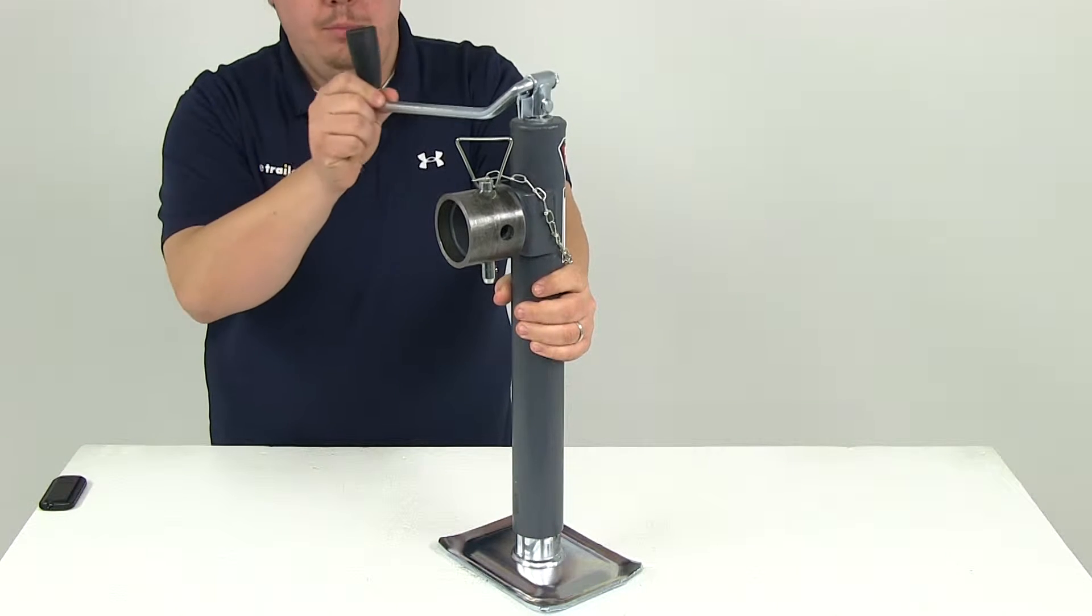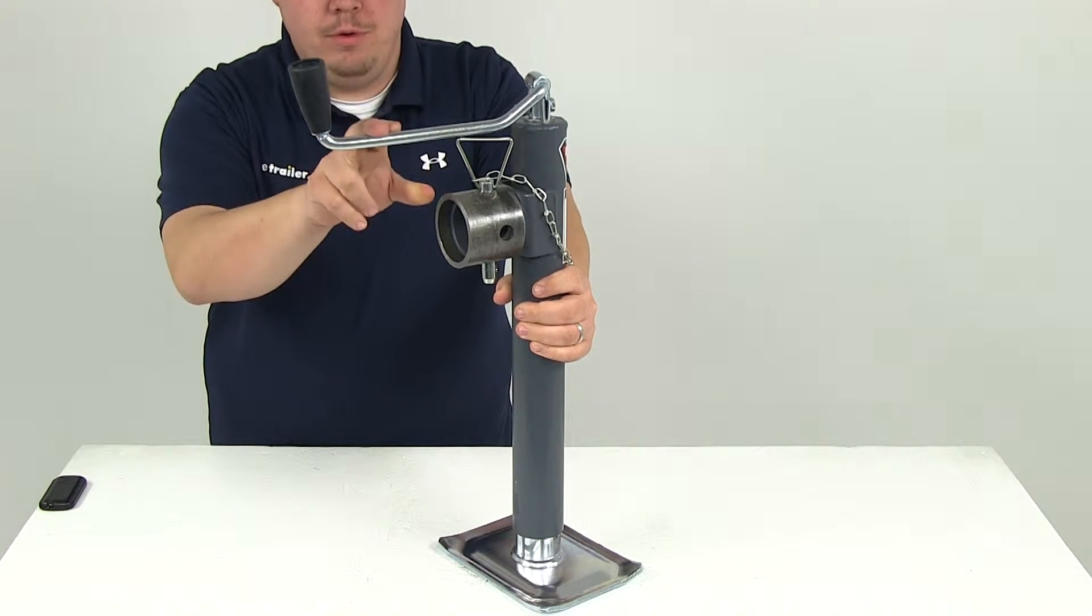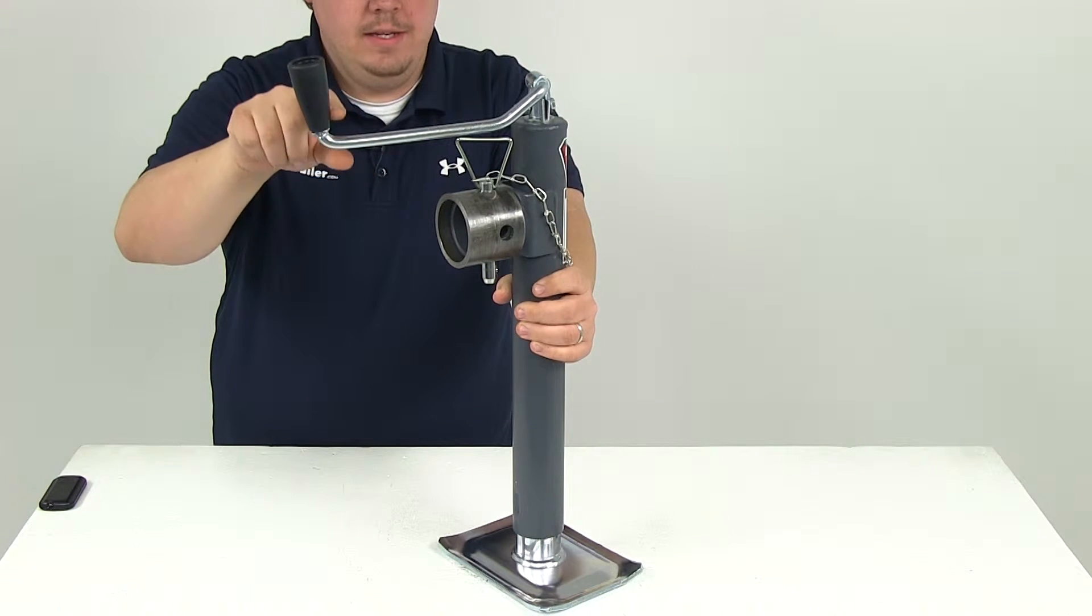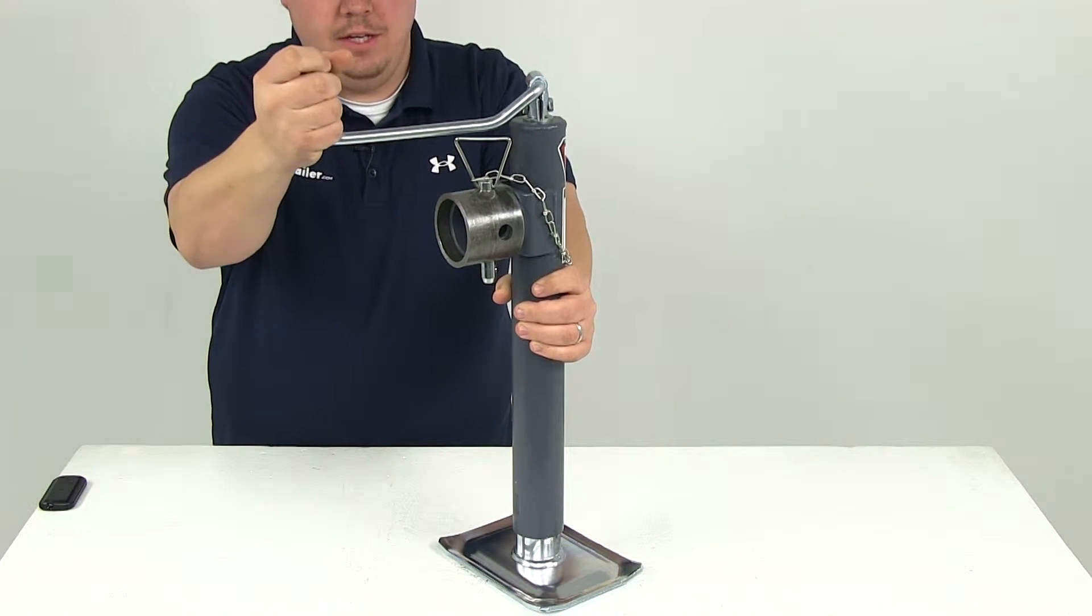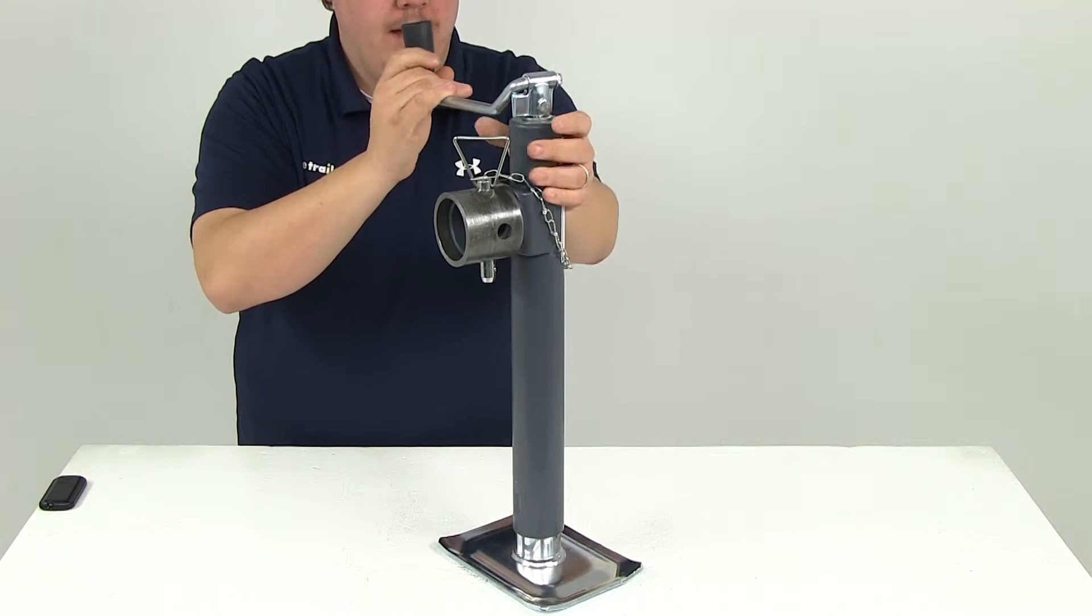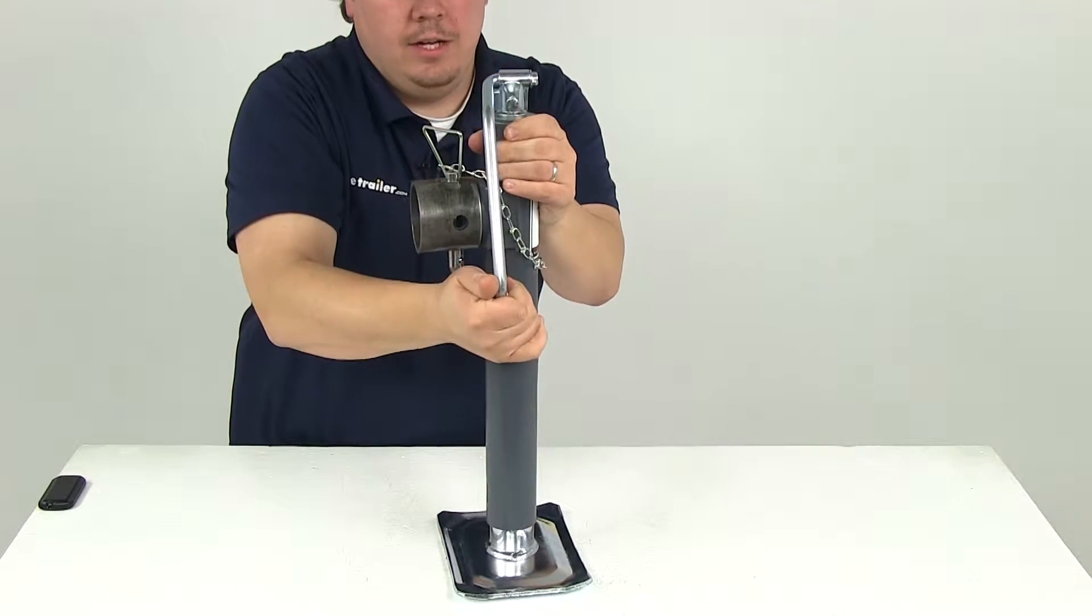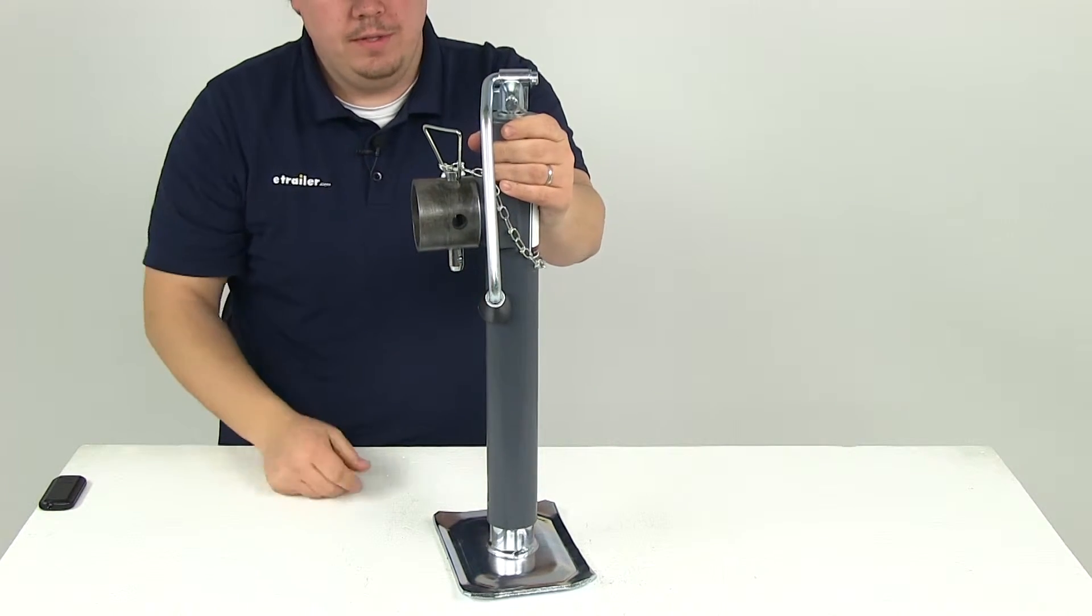Right here is the top wind handle. It's got a smooth ergonomic design for easy cranking. You can see the handle portion is actually raised, which is nice. It allows you to get a good grip, and when you're not using the handle you can rotate it over into a stowed position.